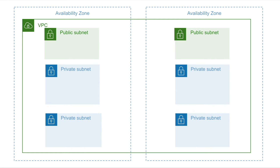Fourth question: what would be the operational networking setup which is not exposed to customers but required for operations like patching? The explanation we have seen is for the customer network flow and not for the operational networking, which is required for patching of the servers, downloading application-related packages from the internet, or third-party integrations like payment gateways. This traffic would not use the same route we have seen — rather, we need a separate route to achieve this.